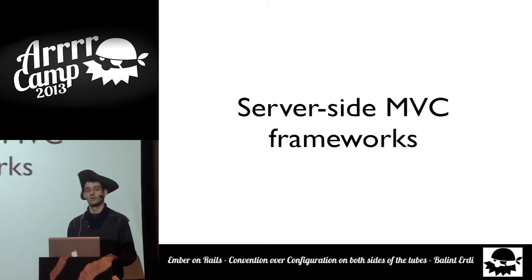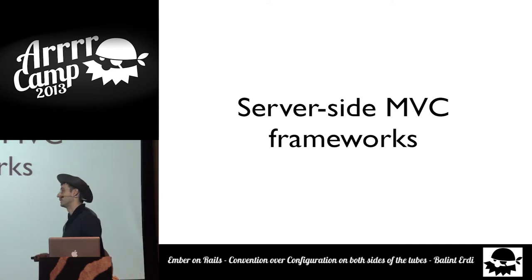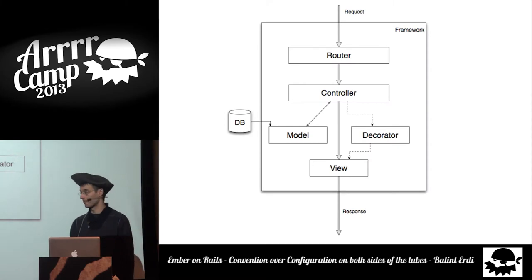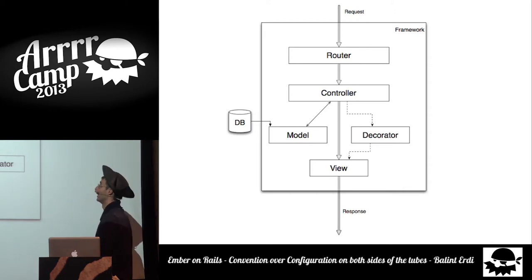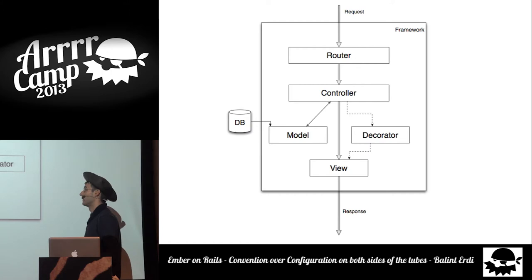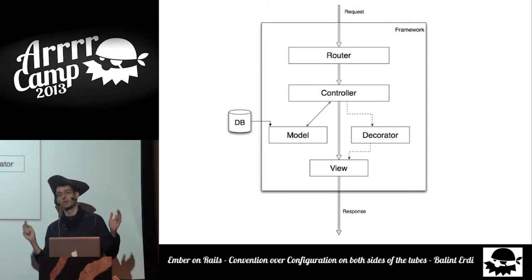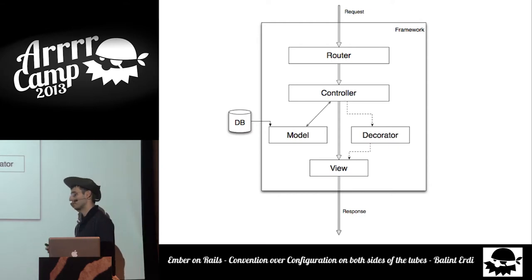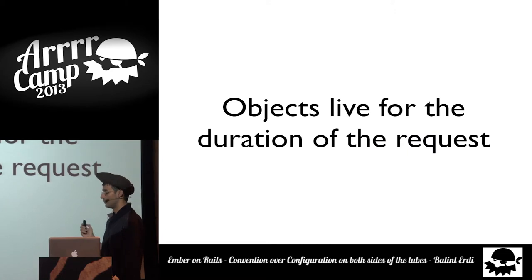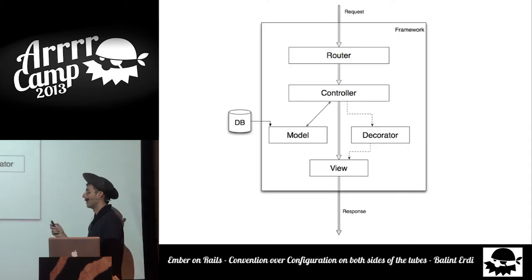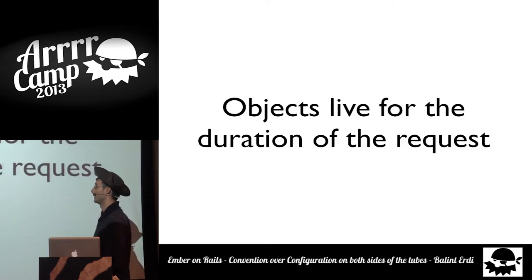Let's compare how server-side and client-side frameworks work, because there are definite differences. With server-side MVC, a request comes in, the router dispatches it to the appropriate controller, that controller fetches some model data, and then sets some variables so that the view can render the response. The view renders a big chunk of HTML, JSON, or XML and sends it back. Importantly, these objects only live as long as the request lives, and then they are torn down and thrown away.